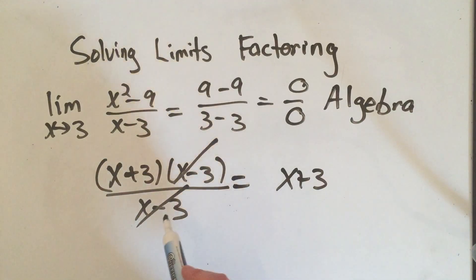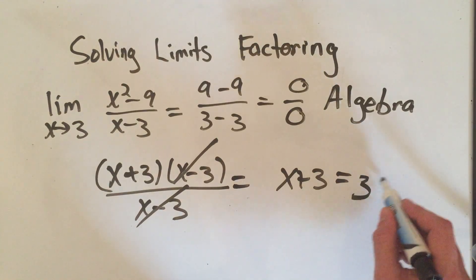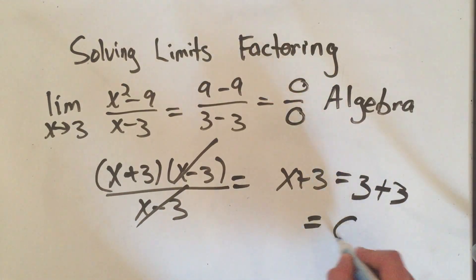Now that I've canceled the denominator, I can evaluate at this limit. I can evaluate at X equals 3. I plug in 3 for X. I get 3 plus 3 is 6. And we're done.